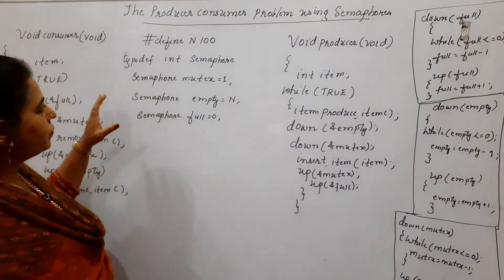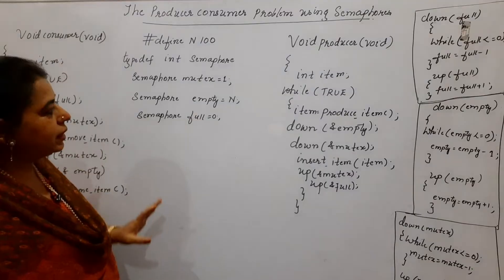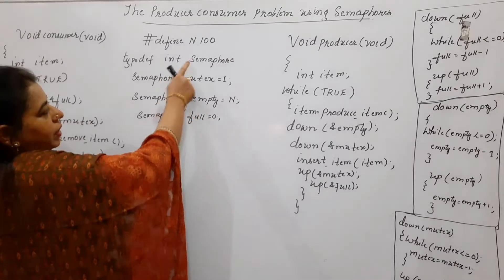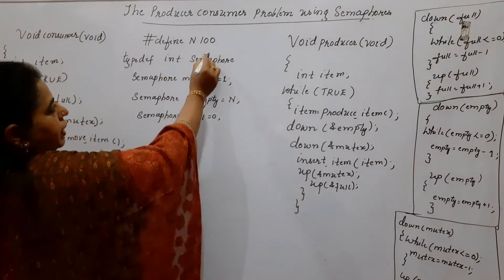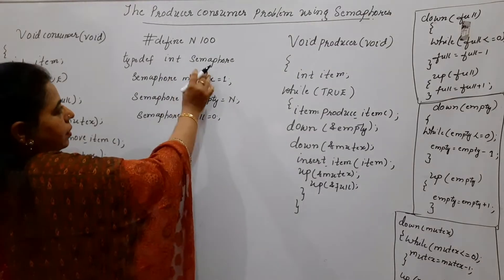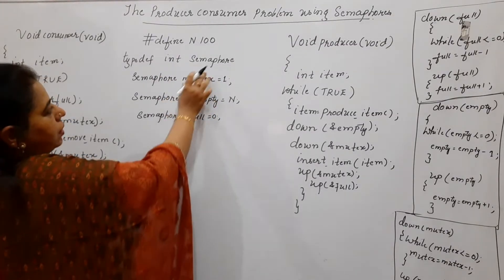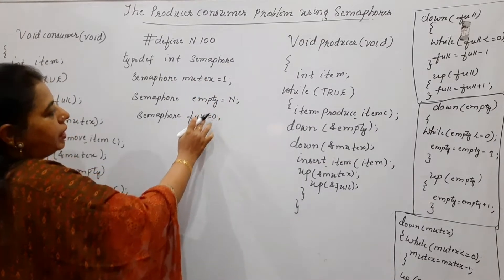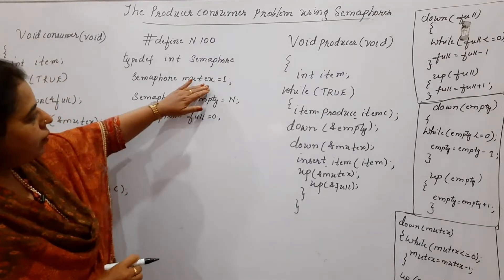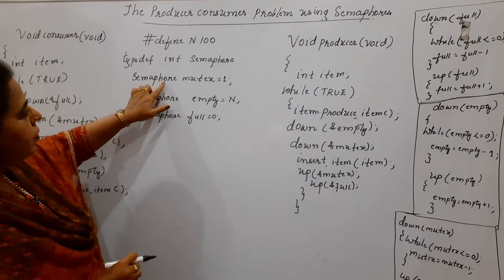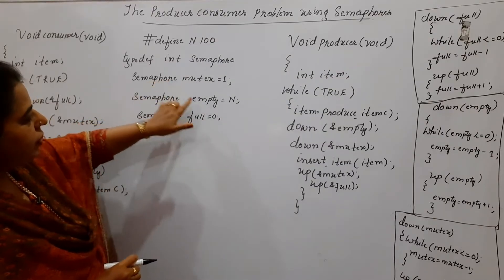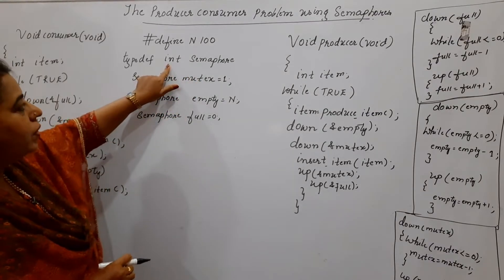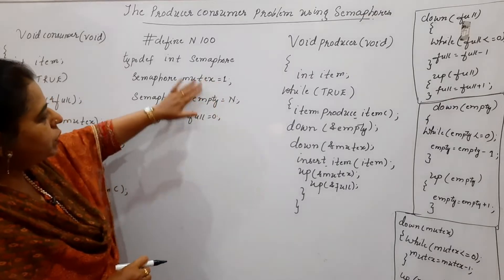Here we are making use of different semaphores. It is not just one semaphore that is required. We require one semaphore with an initial value for n. Three semaphores are used here: one is called mutex, another is called empty, and the third semaphore is called full. In the declaration part, mutex is of type semaphore, empty is of type semaphore, and full is of type semaphore.